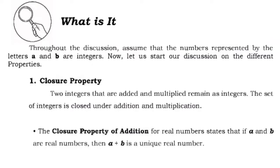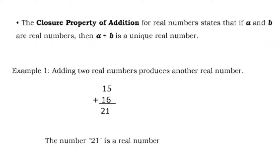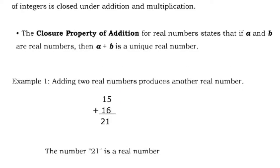The first property is the closure property. Two integers that are added and multiplied remain as integers. The set of integers is closed under addition and multiplication. The closure property of addition for real numbers states that if A and B are real numbers, then A plus B is a unique real number. For example, adding two real numbers produces another real number. So 15 plus 16 is 31, not 21.